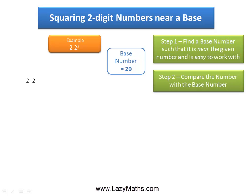The next step is to compare the number 22 with 20. So 22 minus 20 is positive 2. The plus sign is because we have 22 more than 20, and this is called the difference. Plus 2 is the difference between 22 and 20.